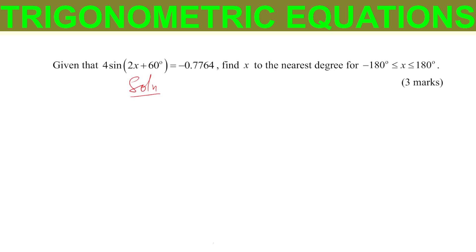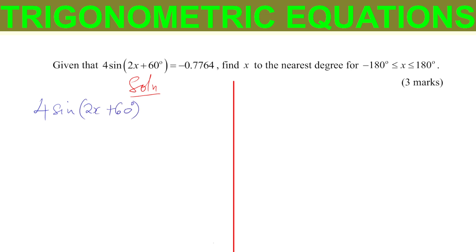Let's go to the solution. The first thing we're going to do is divide both sides to get rid of the 4. Our intention is to get the value of x, so we need to eliminate everything and remain with x. Dividing both sides by 4, we get sine of (2x + 60°) equals negative 0.1941.